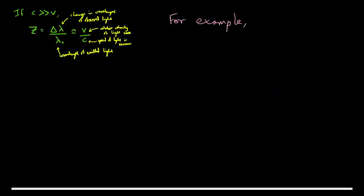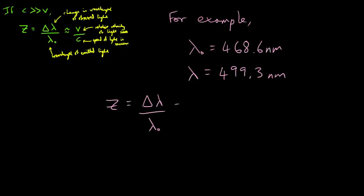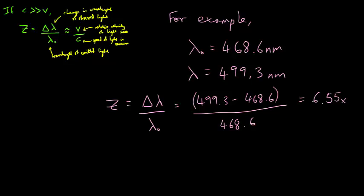For example, the absorption line in a line spectra corresponding to helium has a wavelength of 468.6 nm, but this is observed at 499.3 nm. What is the recessional speed of this star? So we can calculate Z equals the change in wavelength divided by the original wavelength, which is going to be 499.3 minus 468.6 divided by 468.6, and that gives us a redshift of 6.55 times 10 to the negative 2.